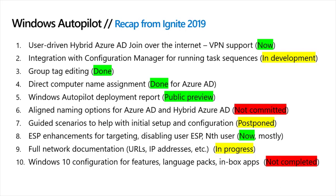On the enrollment status page, there were requests from customers to be able to target to devices — that is also days away. Before that change, you could only target ESP profiles to groups containing users or to all users and devices with the default ESP. With this change going live pretty much right now, you'll be able to target device groups as well. We will prefer any device-targeted ESPs first, then any user-targeted ESP settings, before finally deciding to use the default ESP.